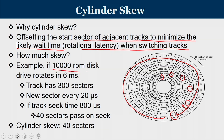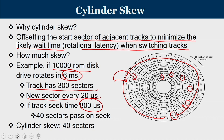Working example: a 10,000 RPM disk completes one rotation in 6 milliseconds. With 300 sectors per track, each new sector arrives every 20 microseconds. If the seek time to move one track is 800 microseconds, then during that 800 microseconds, 40 sectors pass under the head. Therefore the cylinder skew is 40 sectors — adjacent cylinders must have their sector numbering shifted by 40.